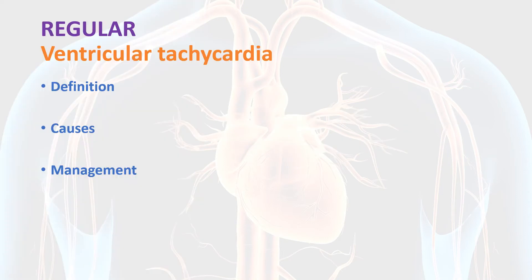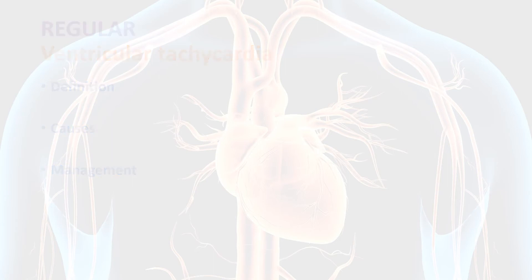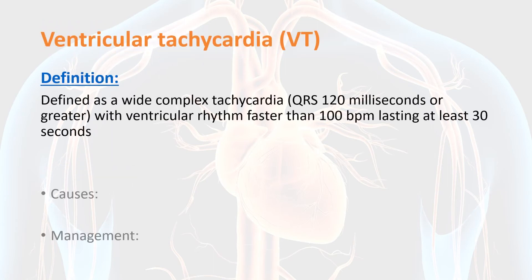As discussed earlier, broad complex tachycardia can be further subdivided into regular and irregular. Ventricular tachycardia is an example of regular broad complex tachycardia. VT is defined as broad complex tachycardia with QRS complex duration of 120 ms or more — corresponding to three or more small squares on ECG — heart rate greater than 100 beats per minute, and regular rhythm. It is called sustained if the duration is 30 seconds or more.